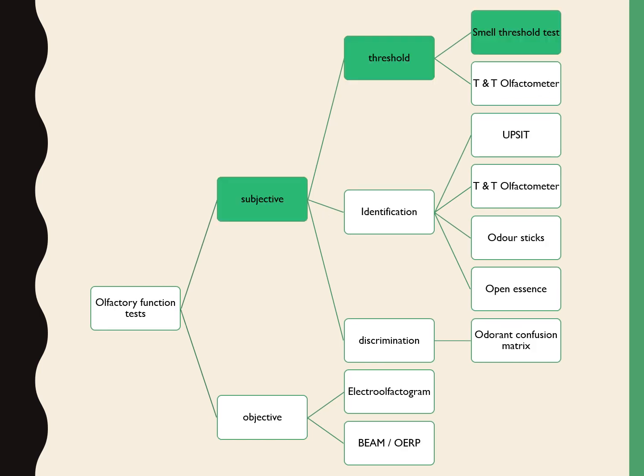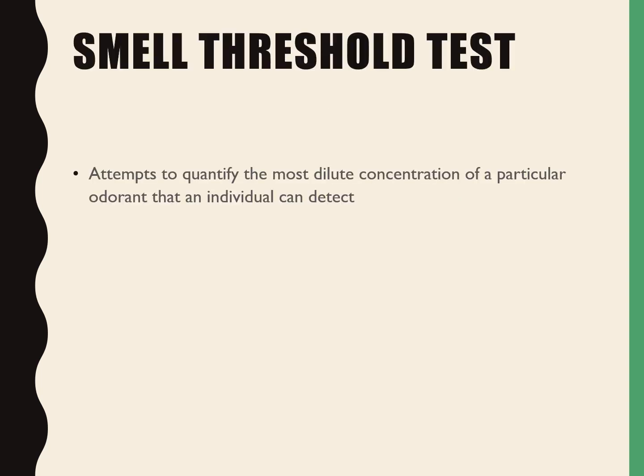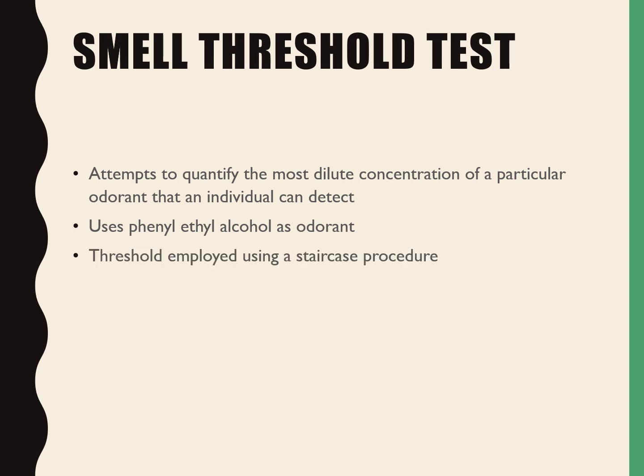The first test is the smell threshold test, which is a subjective type of threshold test. It attempts to quantify the most dilute concentration of a particular odorant that an individual can detect. It uses phenyl ethyl alcohol as an odorant, with the threshold determined using a staircase procedure, and can be done unilaterally or bilaterally.